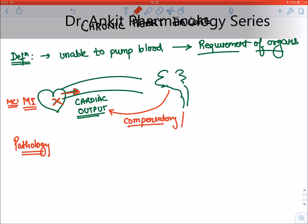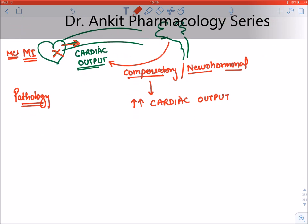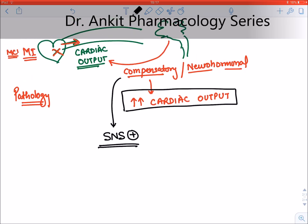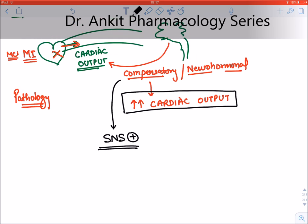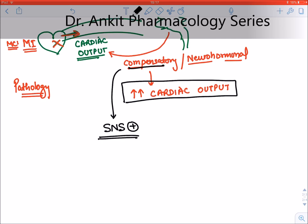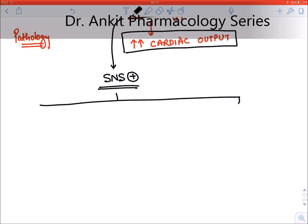These compensatory and neurohormonal mechanisms will try to increase the cardiac output so that the heart is able to pump a sufficient amount of blood. The first compensatory mechanism is the discharge of the sympathetic nervous system. When there is a fall in cardiac output, the brain tells the heart to pump more blood — this is the sympathetic output.